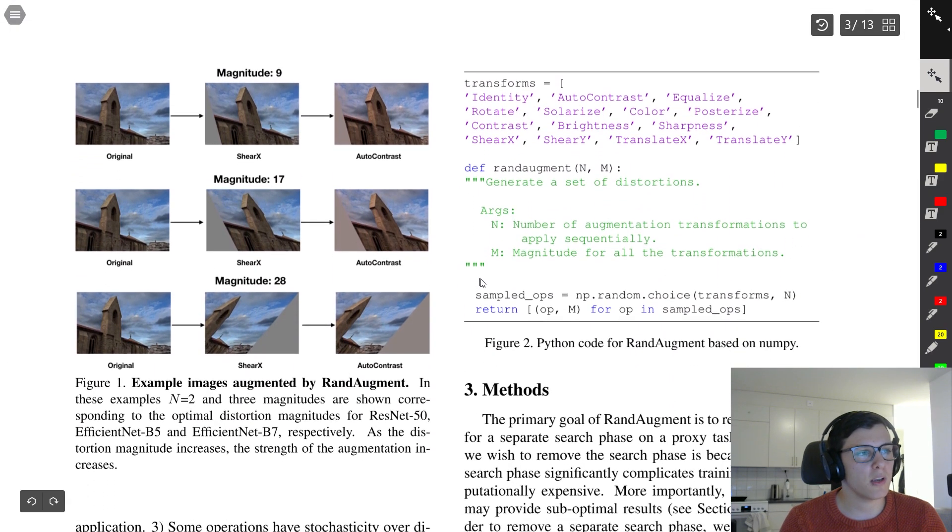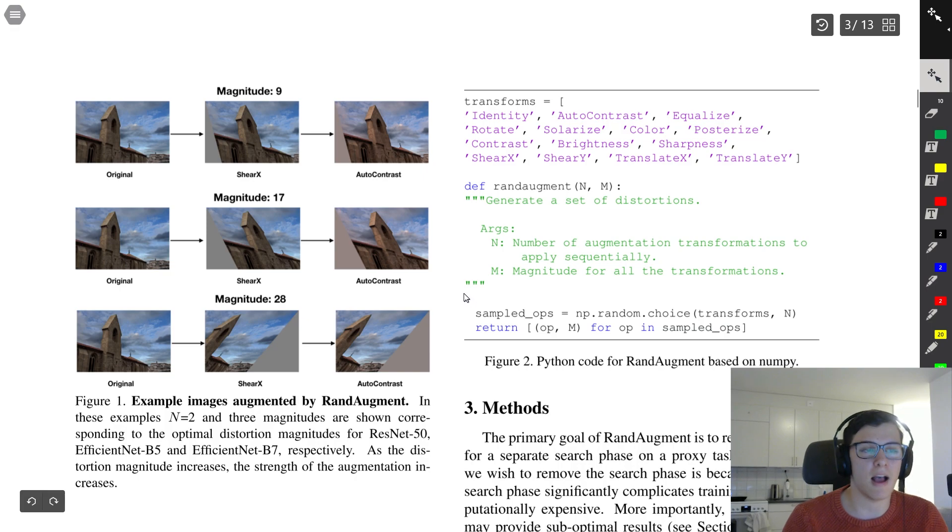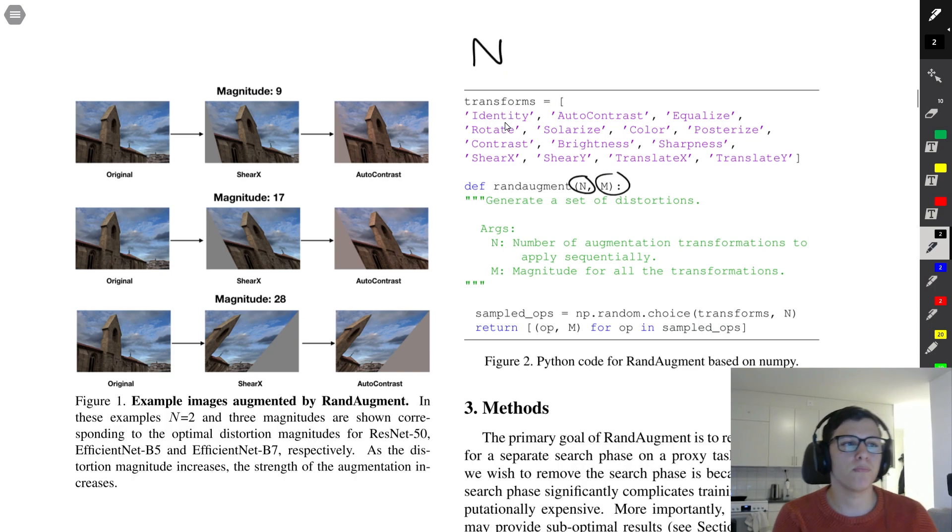Here is where they explain the algorithm for RandAugment, which is surprisingly simple. They have two hyperparameters: n and m. The first is n, which describes how many transforms they want to do sequentially. Let's say n is two. They'll choose two transforms to do out of a transformed list. For example, auto-contrast and perhaps translate X.